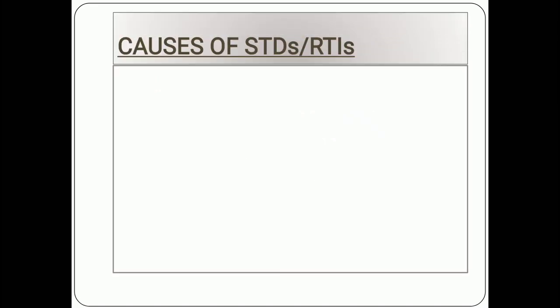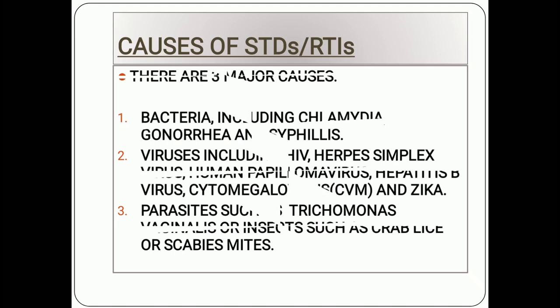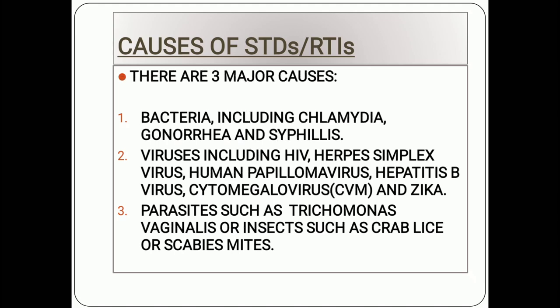Moving forward to causes, there are mainly three major causes: bacteria, viruses, and parasites. Bacteria include Chlamydia, Gonorrhea, and Syphilis. Viruses include HIV — Human Immunodeficiency Virus — which causes the deadly condition Acquired Immunodeficiency Syndrome (AIDS), Herpes Simplex Virus, Human Papilloma Virus (HPV), Hepatitis B which causes inflammation of the liver, Cytomegalovirus, and Zika Virus. Parasites include Trichomonas vaginalis or insects such as Crab Lice and Scabies mites.